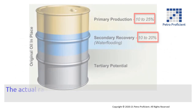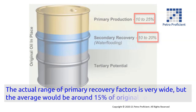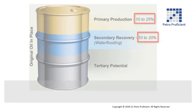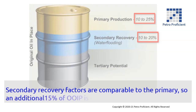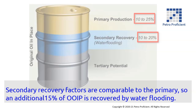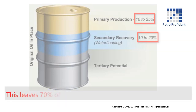The actual range of primary recovery factors is very wide, but the average would be around 15% of original oil in place. Secondary recovery factors are comparable to the primary, so an additional 15% of original oil is recovered by water flooding. This leaves 70% of original oil in place unrecovered.